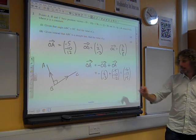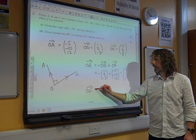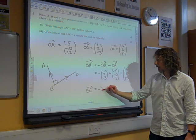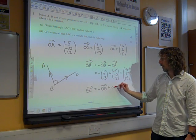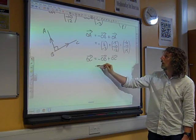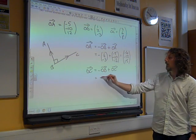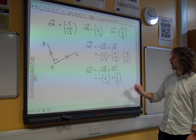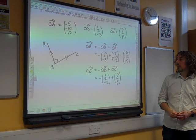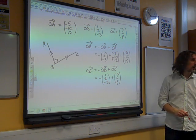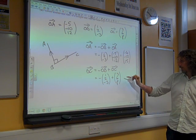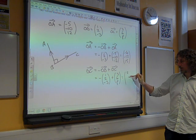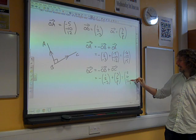And the vector BC, in a similar idea, that's the vector that goes from B back to the origin, and then from the origin to C. So that's minus OB plus OC. So it's the negative of 1, 2, minus 3, plus 3, 6, P. Again, really careful about the minus signs in here. What is this? 2, 4, and 3 plus P, I think.